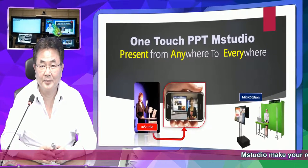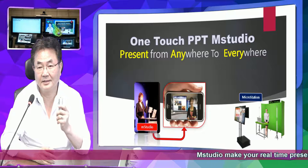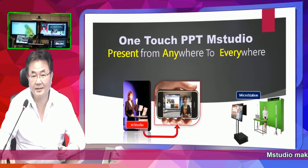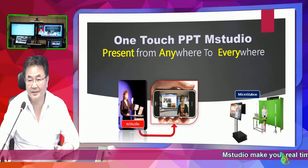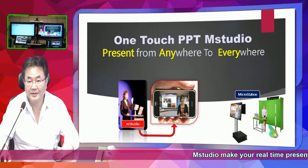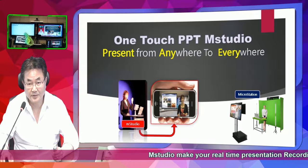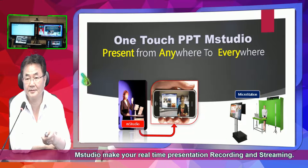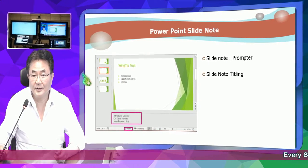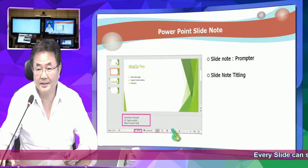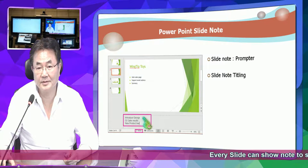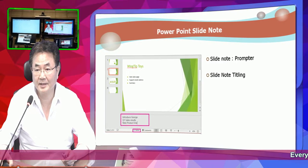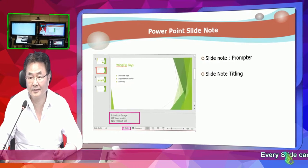When I bring the PowerPoint, the PowerPoint screen is showing here with the titling. The titling here is the PowerPoint slide note, which is also showing on this big screen. So whenever you press the button for next slide, all the slides appear here along with the slide note which you prepare for what you want to speak. This note is showing here and at the same time we have a slide here.